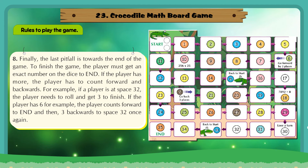Rule 8: Finally, the last pitfall is towards the end of the game. Rule 9: To finish the game, the player must get an exact number on the dice to end. Rule 10: If the player has more, the player has to count forward and backwards.